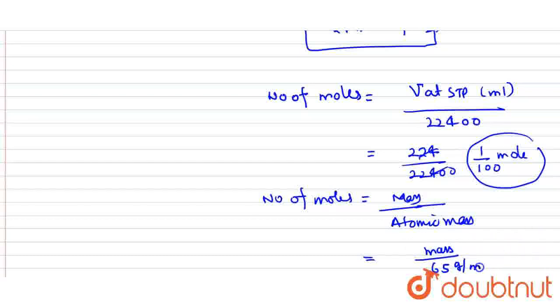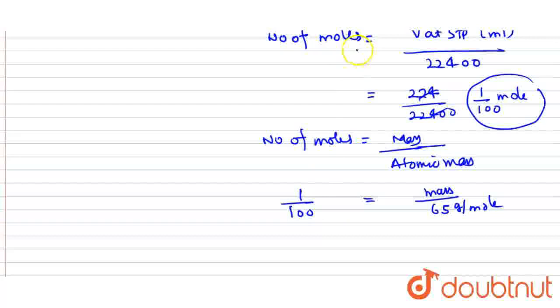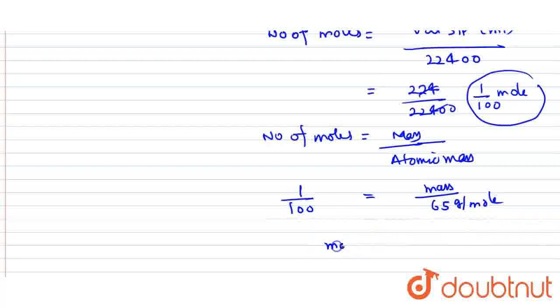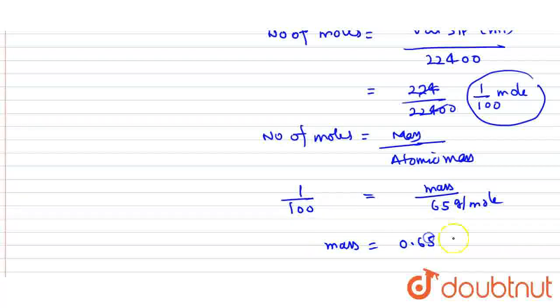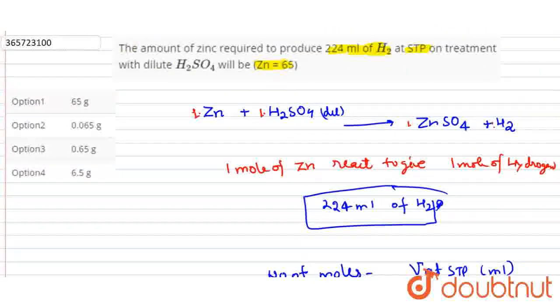We have been given the atomic mass as 65. The mass is what we need to find. Atomic mass is in grams per mole. We have the number of moles, so we can easily find the mass. How much? 0.65g. Because when we multiply the moles by atomic mass, the answer will be in grams. So 0.65g is the answer.